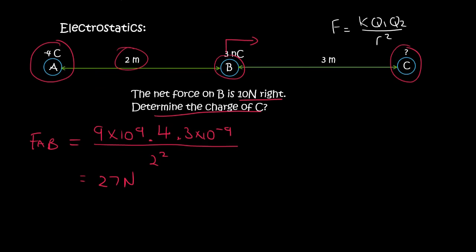Now we know that A is negative and B is positive, so they will be attracted to each other. Because we are talking about B, it means that B is going to have to move to the left. So if A exerts a force of 27 newtons to the left on B, and the overall effect on B is to the right, then how much should C be?